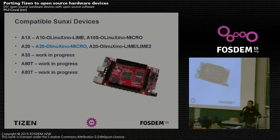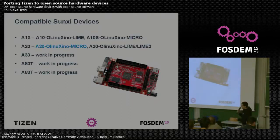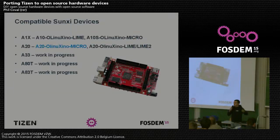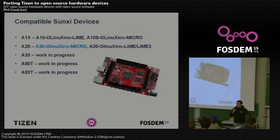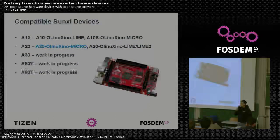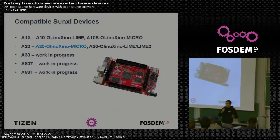The newer Allwinner SoCs being created are the A33, A80, and A83 — we have them in mind. As Hans explained at the beginning of the first day, the Linux Sunxi project is essential for the porting efforts of Tizen as well, because we rely on the Linux kernel available for these boards. At the moment the kernel version is 3.4 and we are using U-Boot.